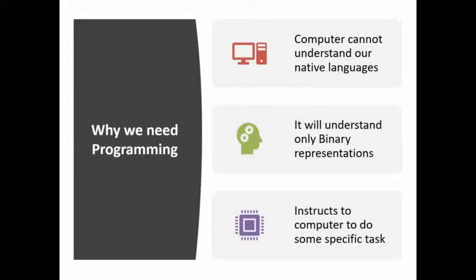Just as in our country there are many languages, in the computer industry also there are many programming languages — C, C++, Java, etc. We write the program in any of these languages, and then the compiler converts that source code into machine code so that it can be understood by the hardware to perform some specific task. When developers write code, they come up with applications.